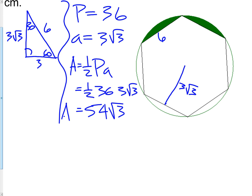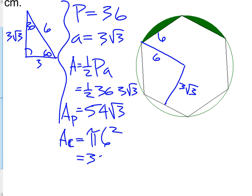That's for our hexagon. For our circle, the area is pi r squared, or pi times 6 squared, which would be 36 pi.